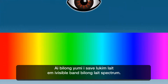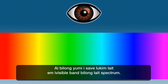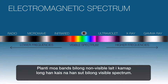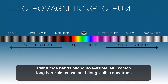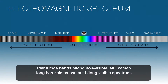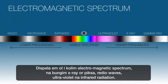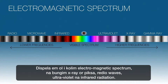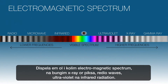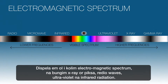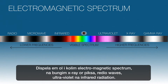Our eyes only see light which is the visible band of the light spectrum. Many more bands of non-visible light exist to the left and right of the visible spectrum. This is called the electromagnetic spectrum and includes x-rays, radio waves, ultraviolet and infrared radiation.